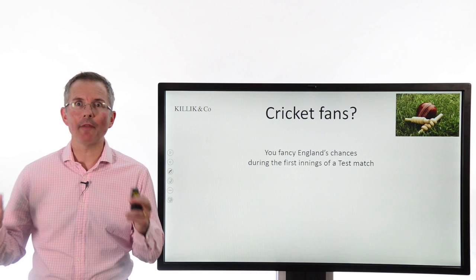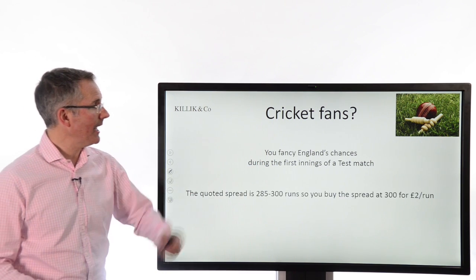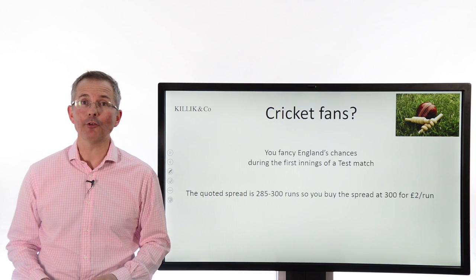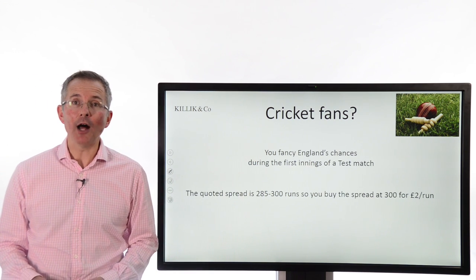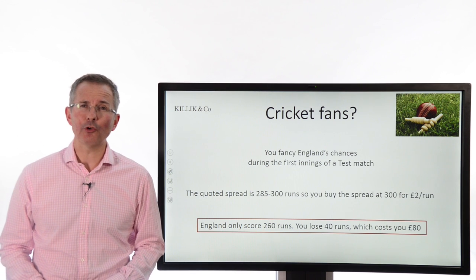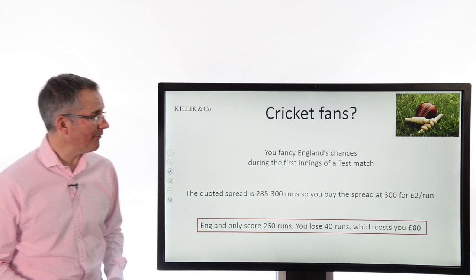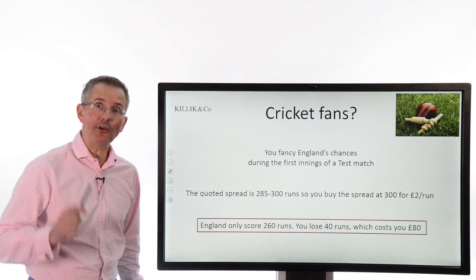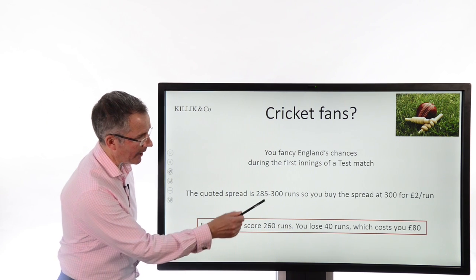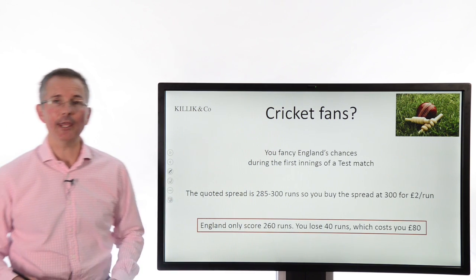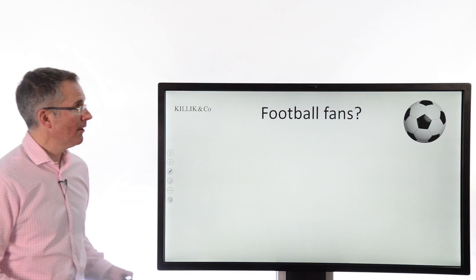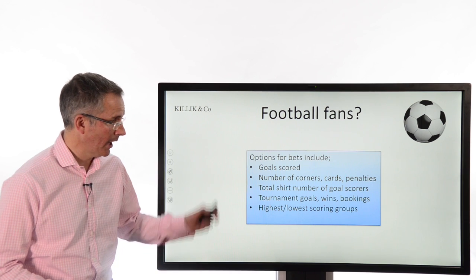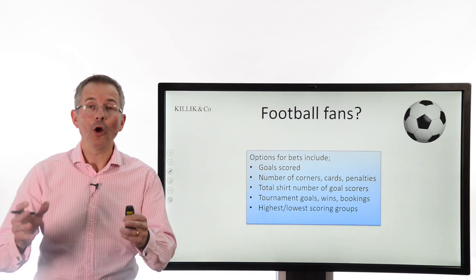How can other people use spread bets? Cricket fans might like to bet on England's chances of getting a decent score during a test match. Imagine a quoted spread is 285 to 300 runs — you could bet at £2 per run on England doing well. If England only score 260 runs, you lose 40 points, because you were buying at 300. If, on the other hand, you had placed a down bet on England, you would cash in the difference between 285 and 260 at your stake of £2 per run. Football fans can bet on all sorts of things — goals scored, corners, cards, penalties, shirt numbers of goal scorers, highest and lowest scoring groups, tournament goals, wins and so on — all using similar principles.